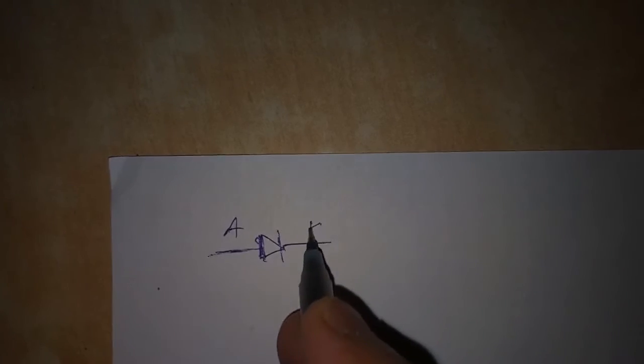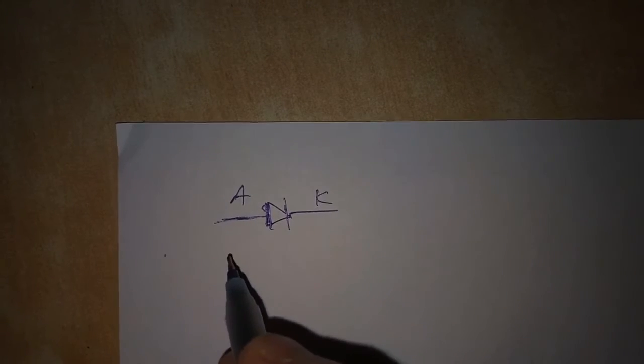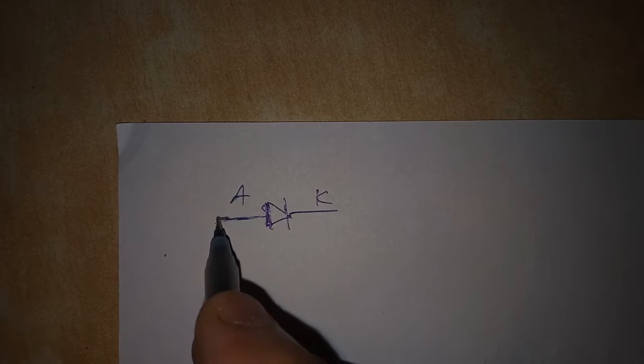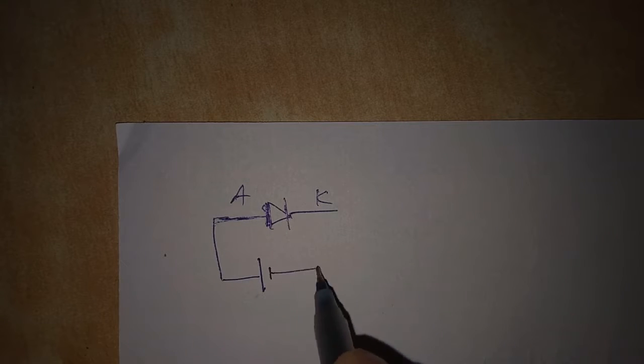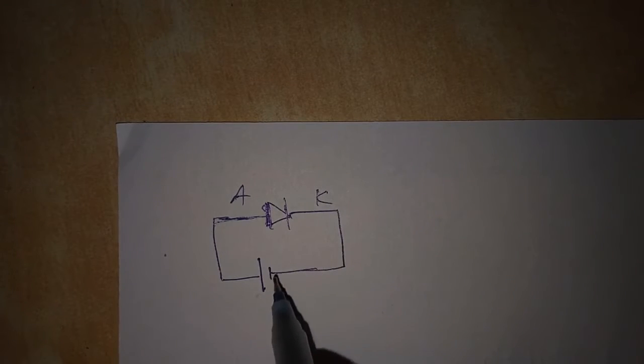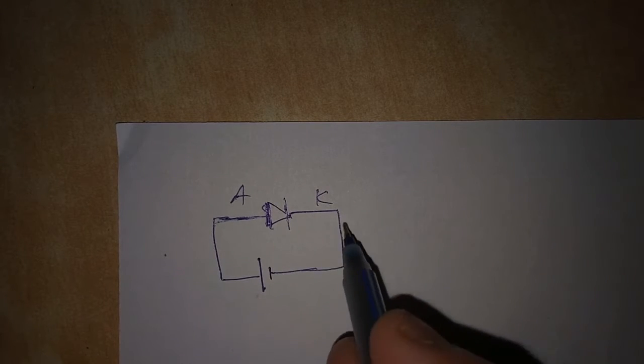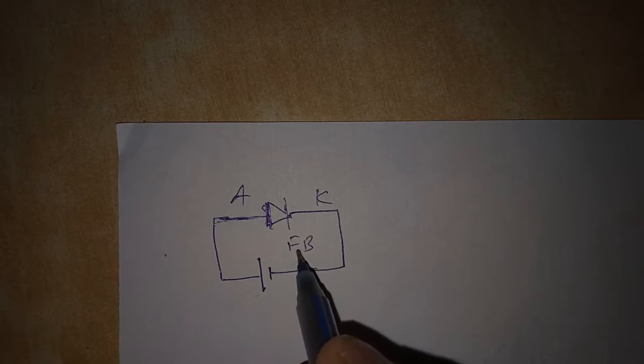Hello students, now I will explain about the VI characteristic of a diode. This is the symbol of a diode — this is the anode and this is the cathode. If we connect this diode with the anode connected to the positive battery and the cathode connected to the negative, this type of alignment is called forward bias.